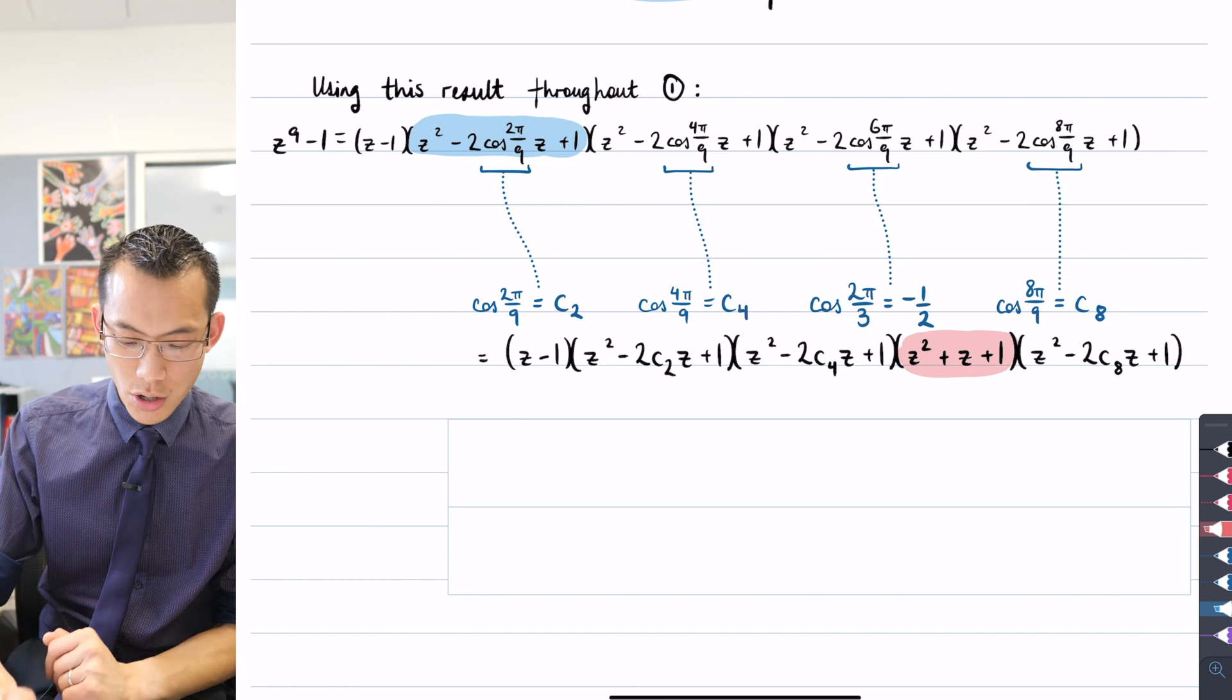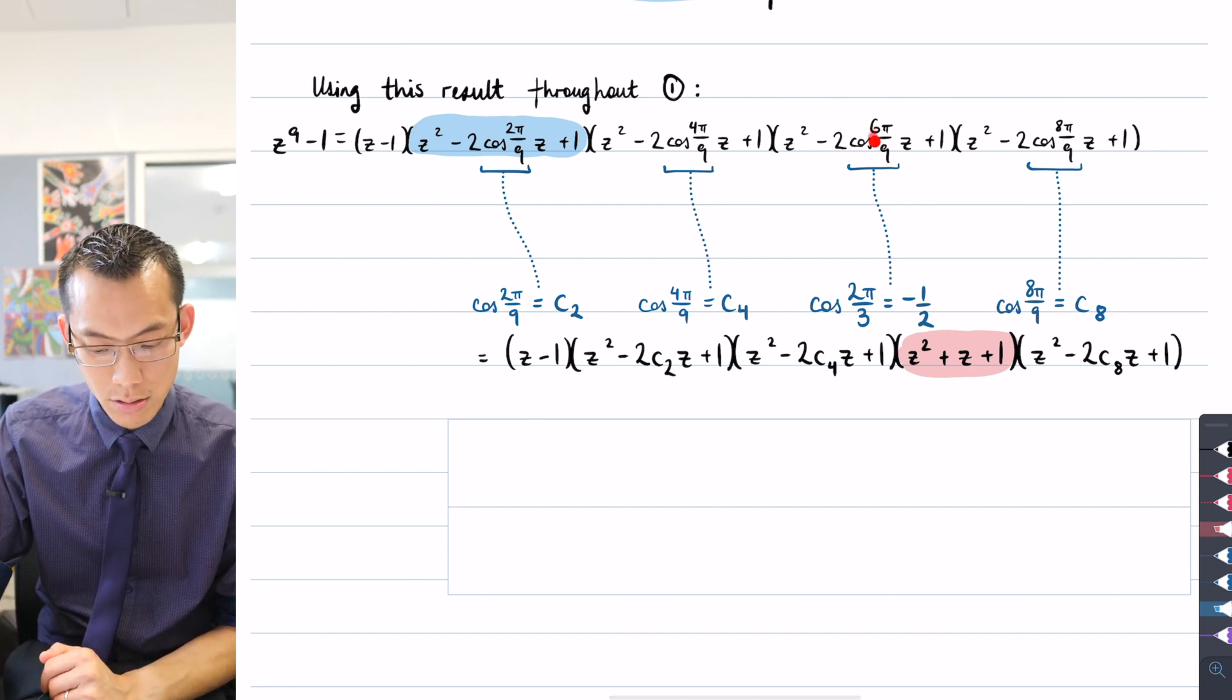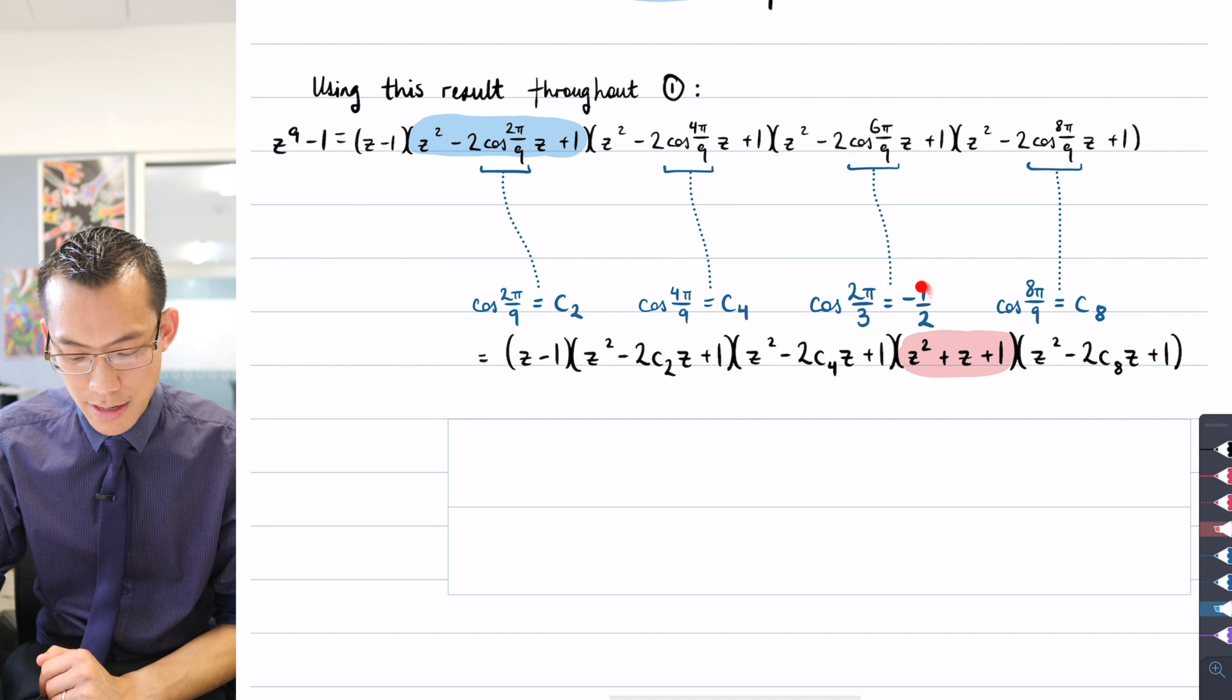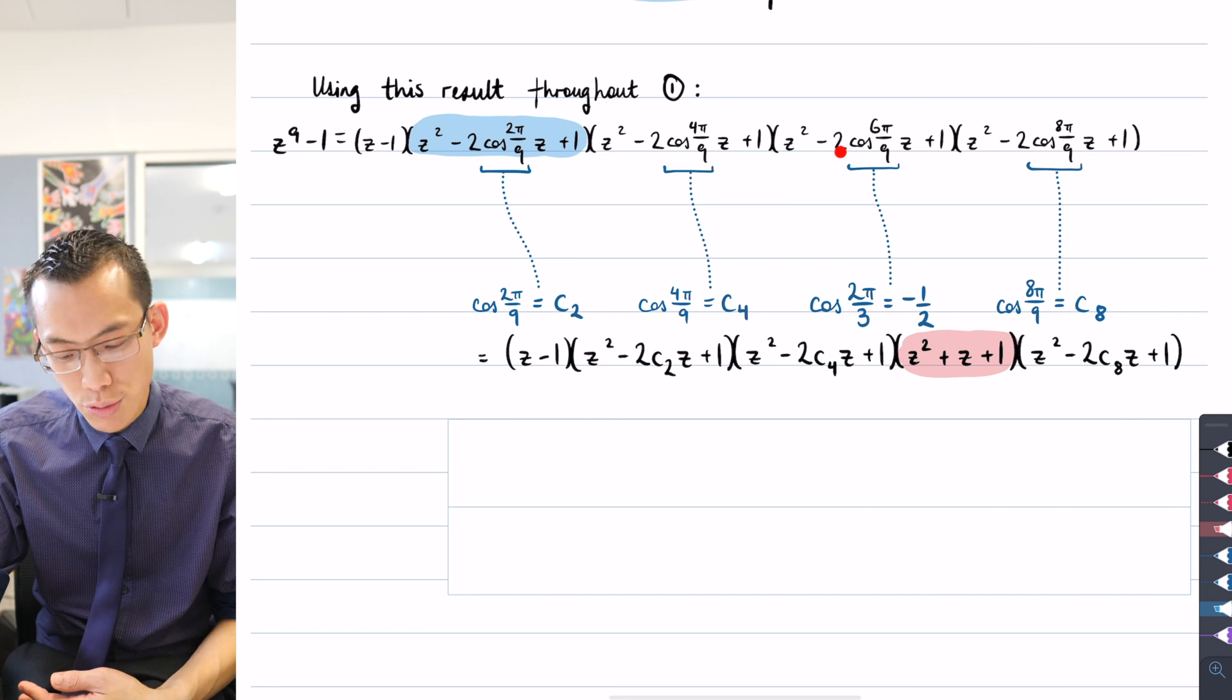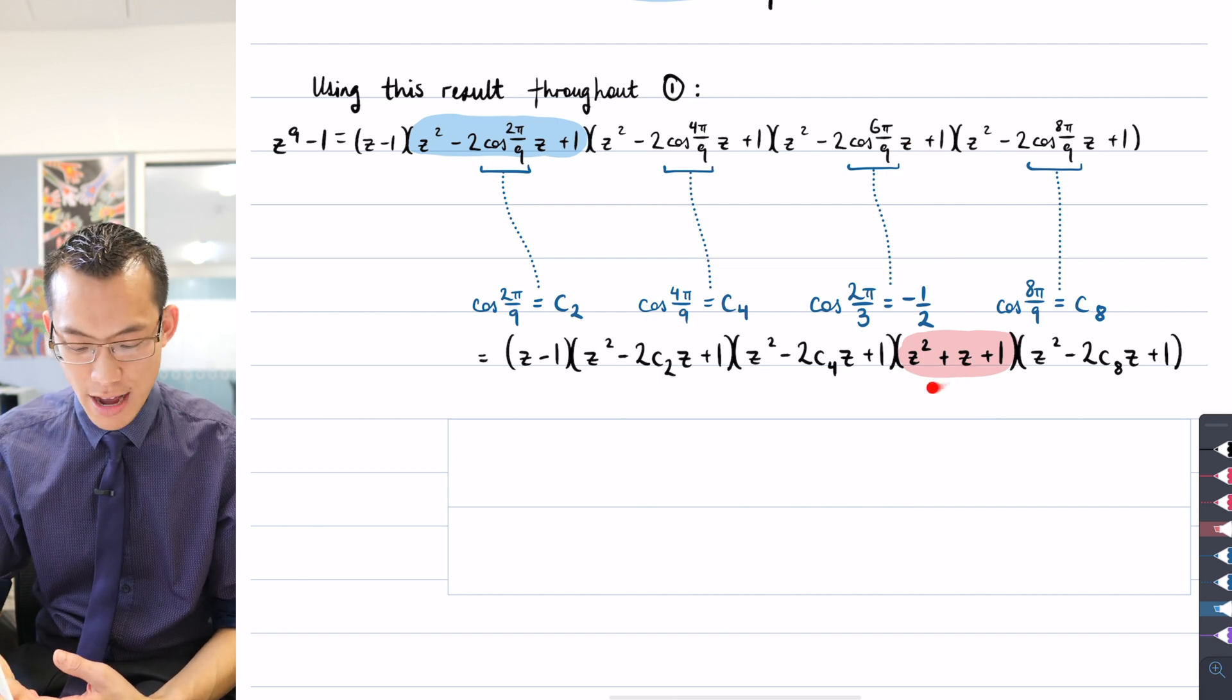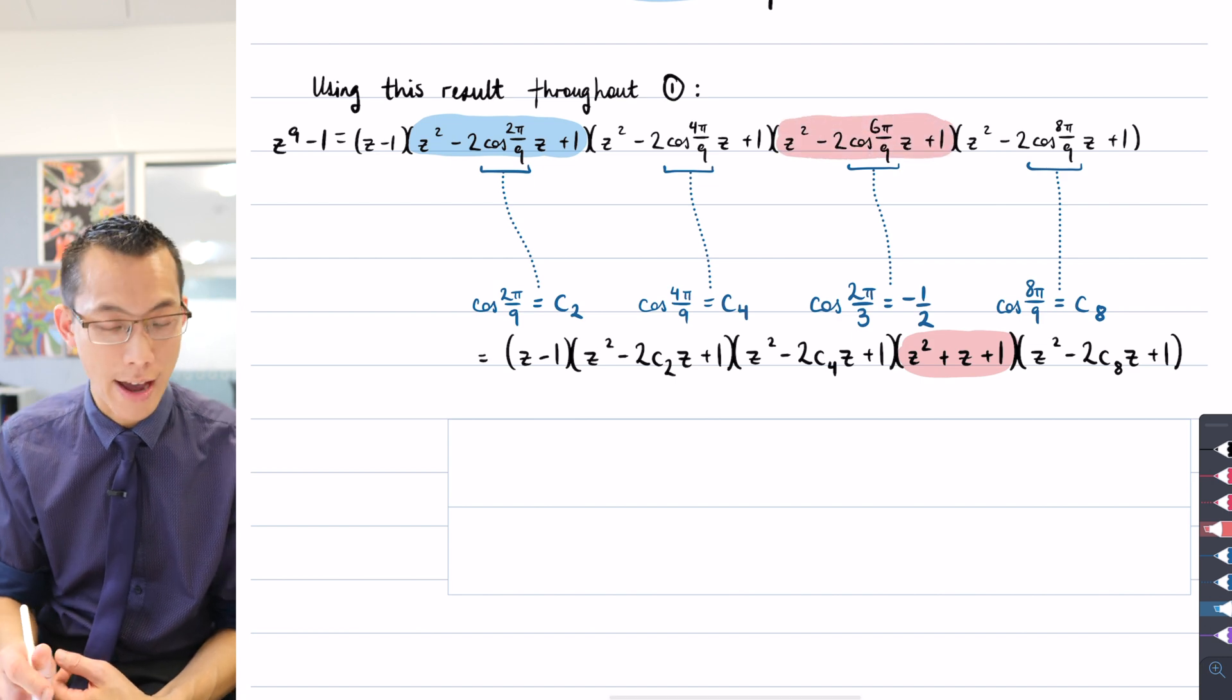So in this case, what you've got is two lots, two lots of cos(6π/9), which we already established is the same as cos(2π/3), that's minus a half. So you have -2 times -1/2, that's just equal to 1. So this -2cos(6π/9)z, take a breath, that just gives you z. So that's why this term, this expression in here, is equivalent to this expression in here, this factor.